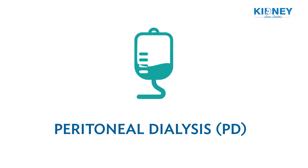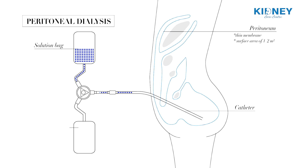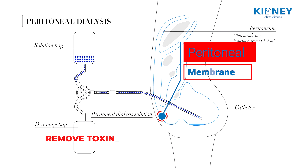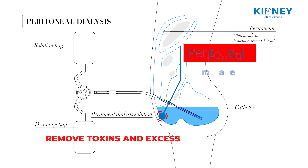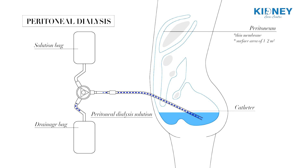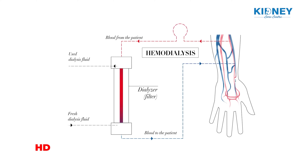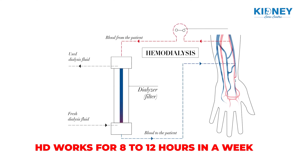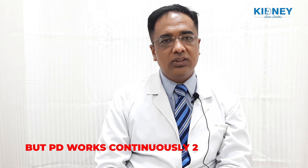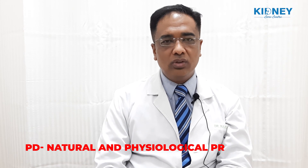In peritoneal dialysis, there is a lining in our belly called the peritoneal membrane, which filters out toxins and extra water. This works as a natural filter of our body and operates 24 hours a day. Compared to hemodialysis, which runs for only 8 to 12 hours a week across two or three sessions, peritoneal dialysis is a 24-hour, more natural and physiological procedure.